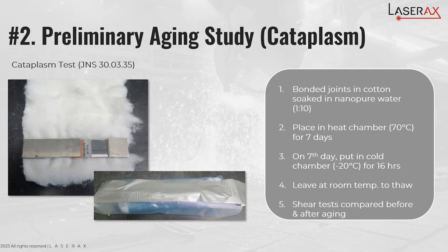With that knowledge, we were able to go into the second phase of our study, which was an aging study. The actual aging test had a limited number of samples, so we decided to do a preliminary test — the cataplasm test — which the company Jaguar uses to characterize their adhesive joints. The aging test goes as follows: adhesive joints are put in cotton soaked in nanopure water with a weight ratio of 1 to 10. The joints are then put into a heat chamber at 70°C for seven days. On the seventh day, they are put into a cold chamber at -20°C for 16 hours.